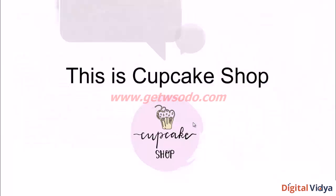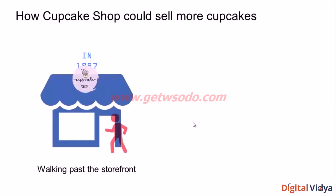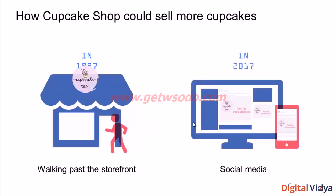Here's an example: a cupcake shop that sells cupcakes. Twenty years ago, if the cupcake shop wanted to get people to walk in, they would have to wait for people to walk past the store and notice it, or rely on word of mouth. Today, the cupcake shop can effectively leverage social media to get in front of their target audiences. They can reach relevant people on Facebook — people who love cupcakes and desserts — when they are in the vicinity of the shop.